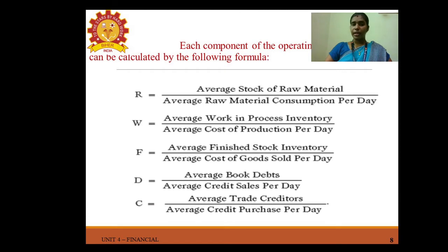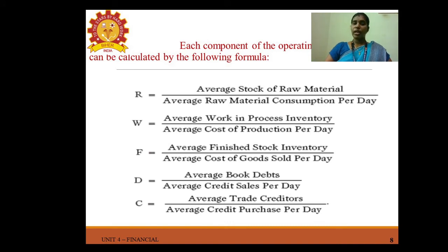Each component of the operating cycle is calculated as follows: R = average stock of raw material ÷ average raw material consumption per day, where average stock = (opening stock + closing stock) ÷ 2. W = average work-in-process inventory ÷ average cost of production per day. F = average finished goods inventory ÷ average cost of goods sold per day. D = average book debts ÷ average credit sales per day. C = average trade creditors ÷ average credit purchases per day.